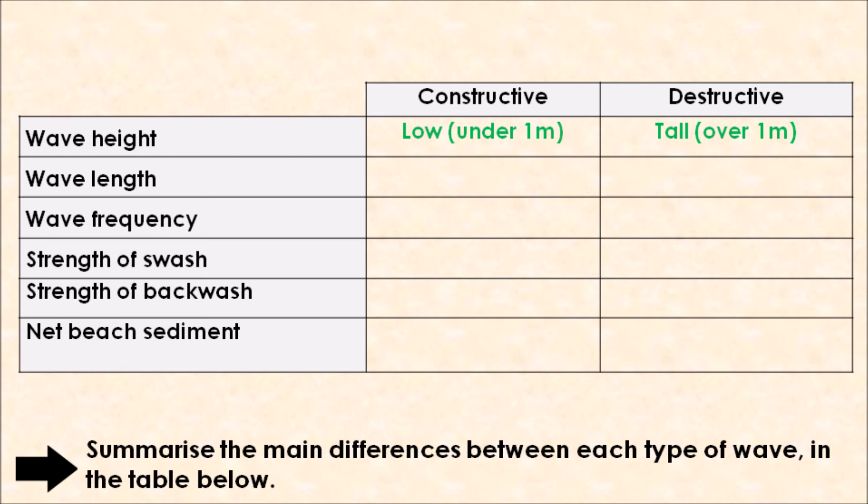In relation to the length of the wave, your constructive wave has a long wavelength compared to your destructive wave, which has a short wavelength. When it comes to wave frequency, we will get 8 to 10 constructive waves approaching the coastline per minute. In comparison, destructive waves we will have about 10 to 14 per minute.